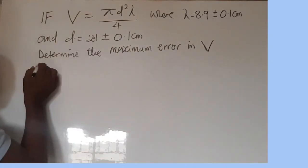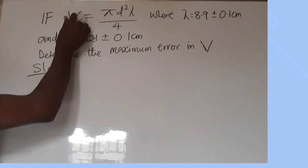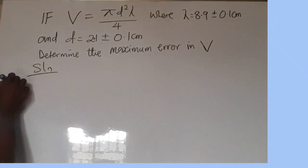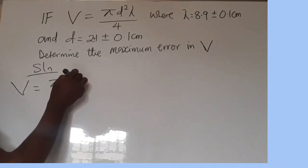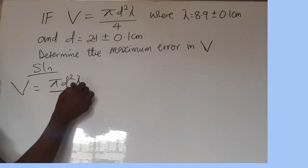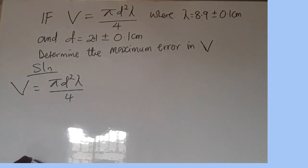So the first thing we place our solution. Remember, something is given to us: the V is given as π d² λ all over 4. That is what is given to us.